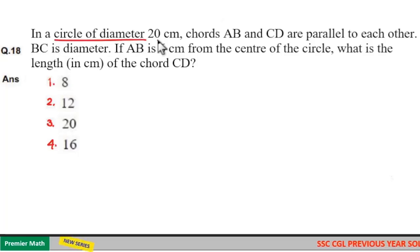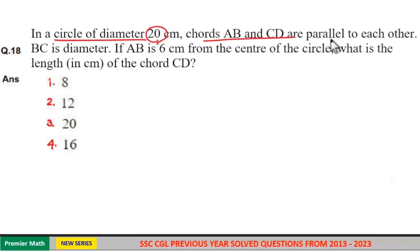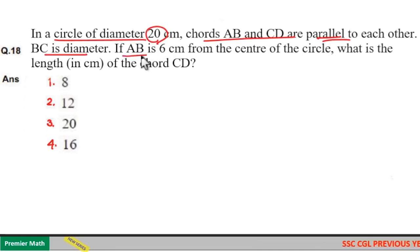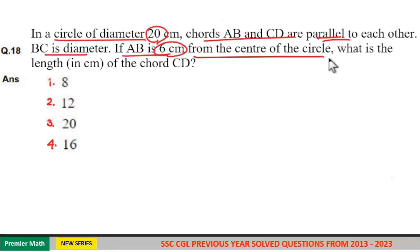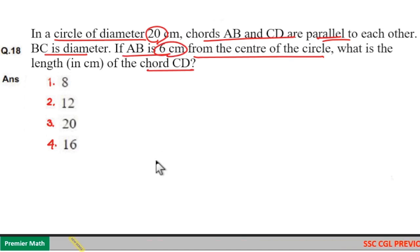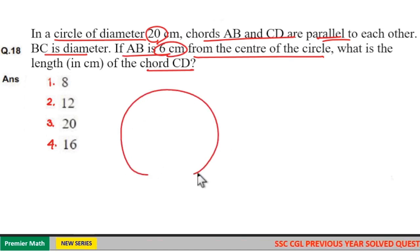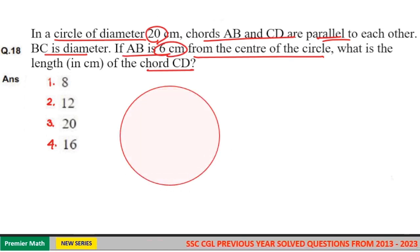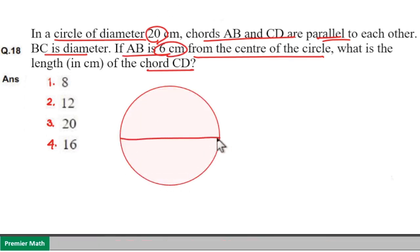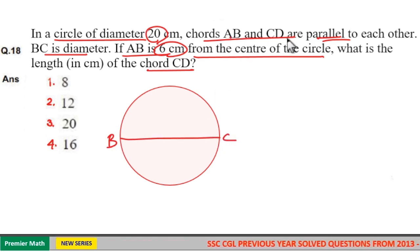In a circle of diameter 20 centimeters, chords AB and CD are parallel to each other. BC is a diameter, AB is 6 centimeters from the center of the circle. What is the length of chord CD? Here is the circle — BC is the diameter and chords AB and CD are parallel.